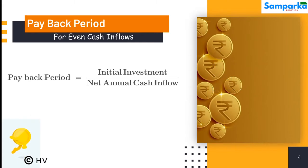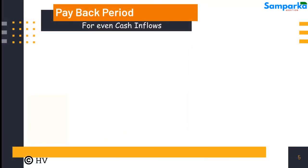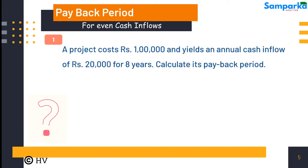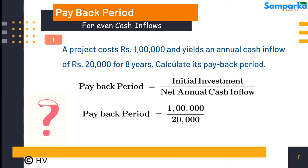The formula to calculate the payback period depends on whether the cash inflows from the project are even or uneven. When the cash inflows are even, the payback period can be ascertained by calculating net earnings before depreciation and after taxes — these are called net annual cash inflows — then dividing the initial outlay by the net annual cash inflow.